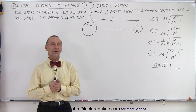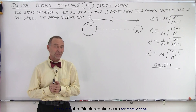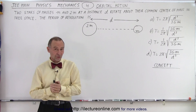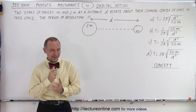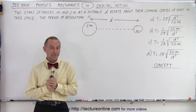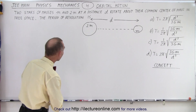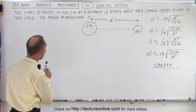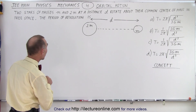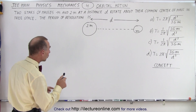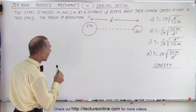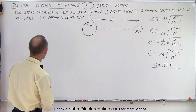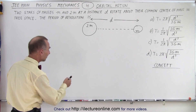Welcome to ElectronLine. Here's a second problem about orbital motion in the very same test — they must like that topic. Two stars of masses m and 2m at a distance d rotate about their common center of mass in free space. The period of revolution is...